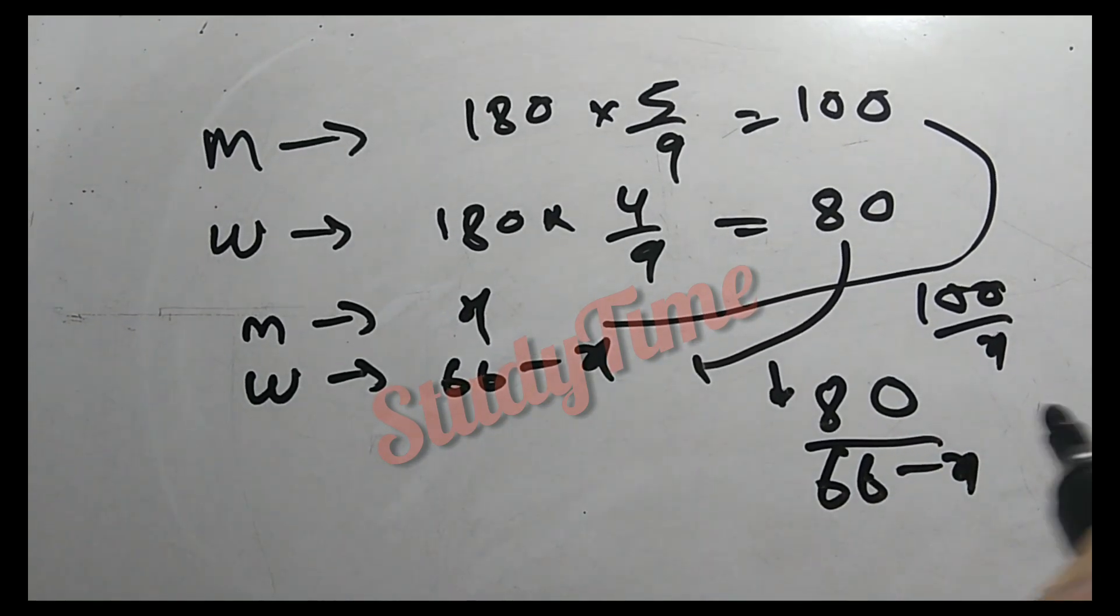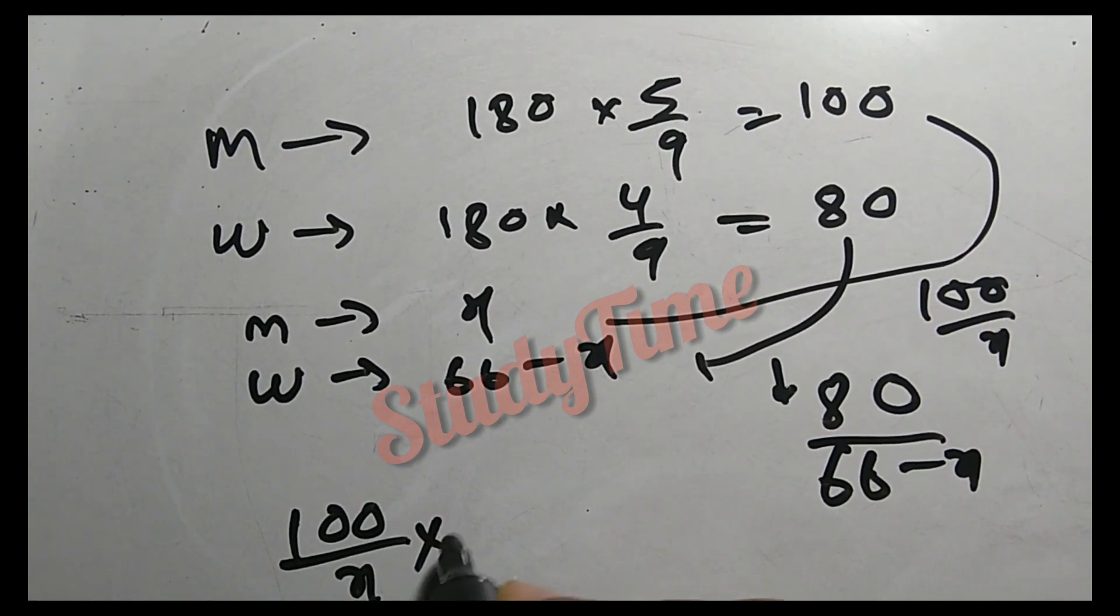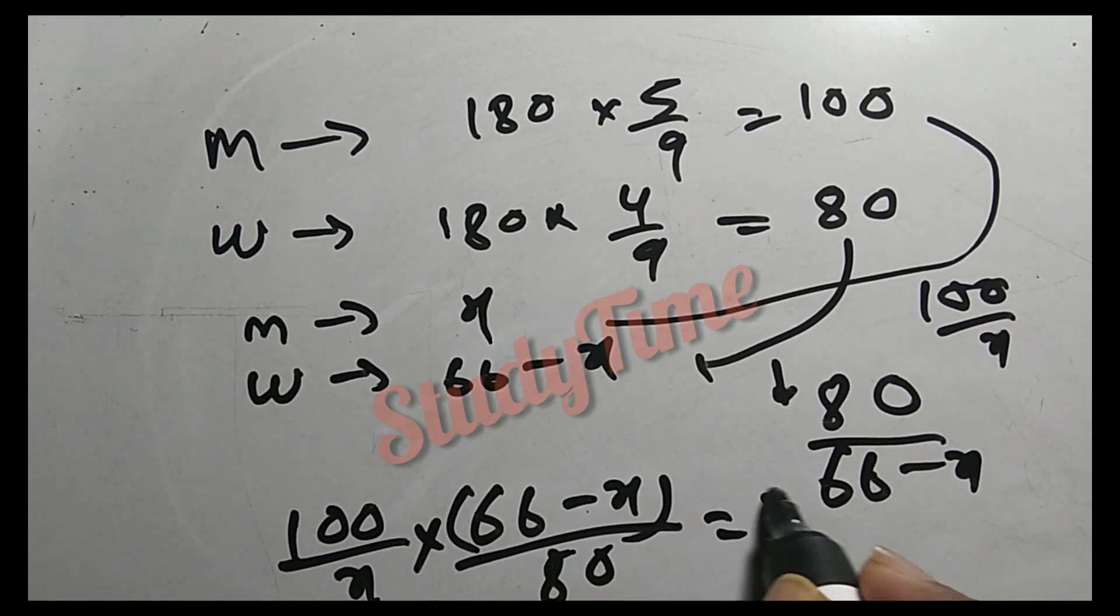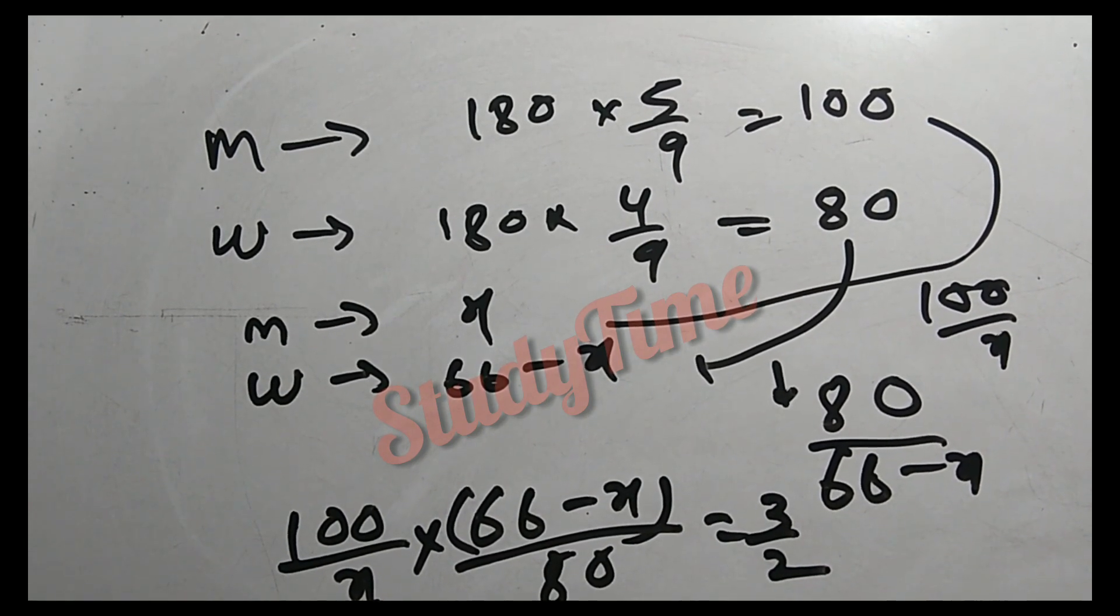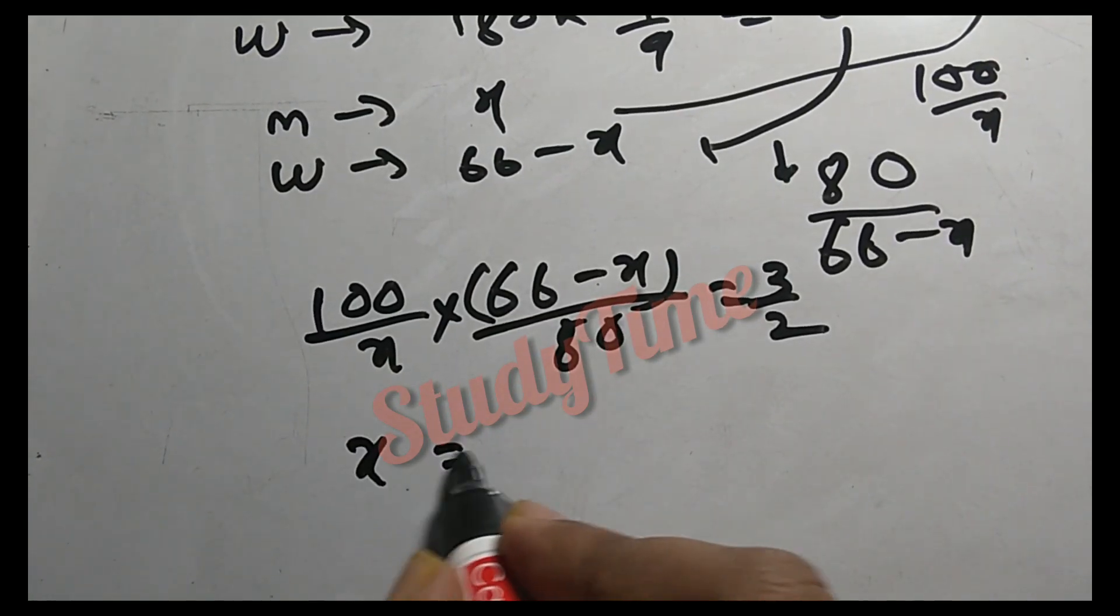So the equation is 100 upon x divided by 80 upon 66 minus x equals 3 by 2. Solving for x.